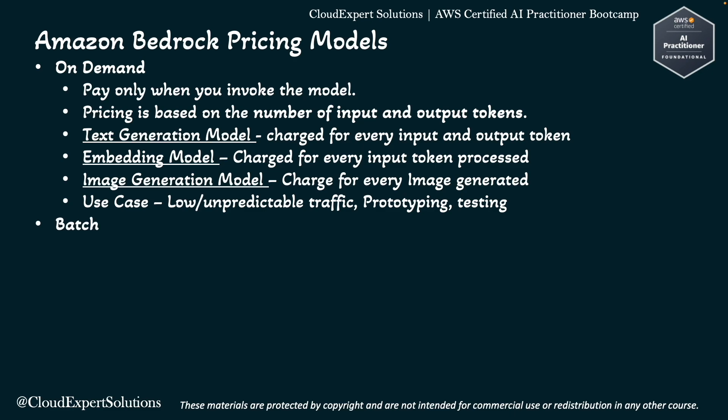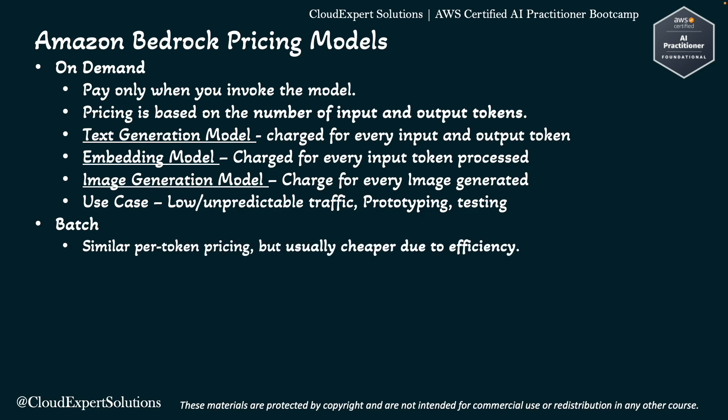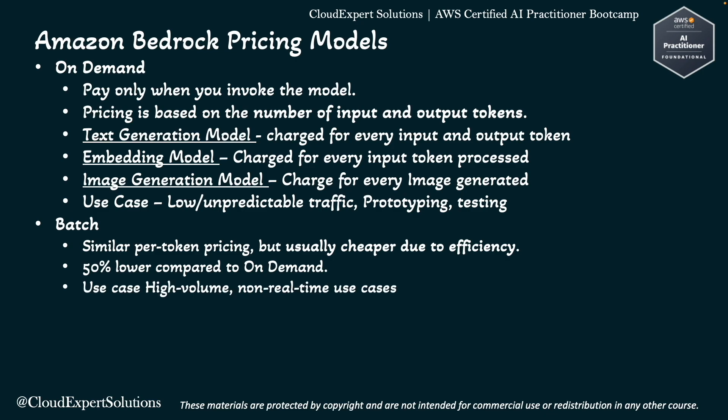The next pricing model is Batch. Under Batch, you submit a large set of requests at once and the AI model processes them asynchronously — you don't get results immediately, but wait for a batch job to complete. The pricing is similar to On-Demand with per-token pricing, but usually cheaper due to efficiency. Under Batch mode, you get 50% lower prices compared to On-Demand. Batch mode is best for high-volume, non-real-time use cases, such as summarizing thousands of documents overnight.